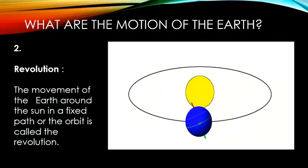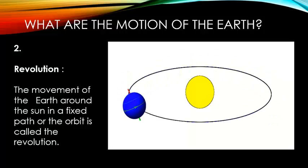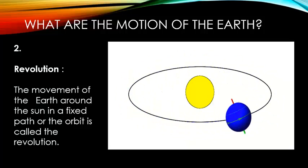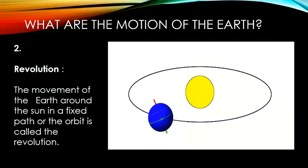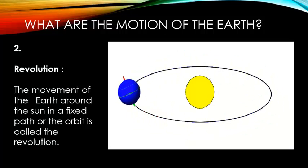Number 2: Revolution. The movement of the earth around the sun in a fixed path or the orbit is called the revolution.